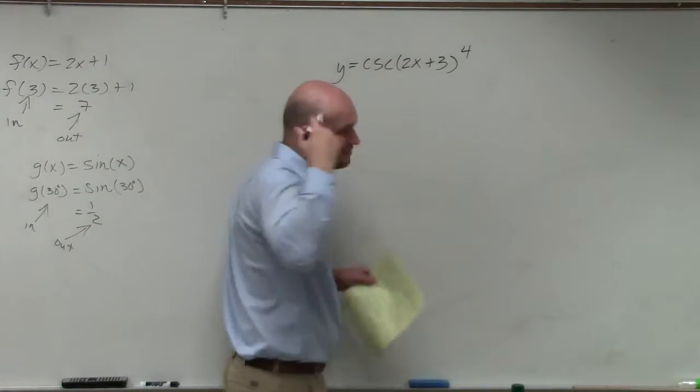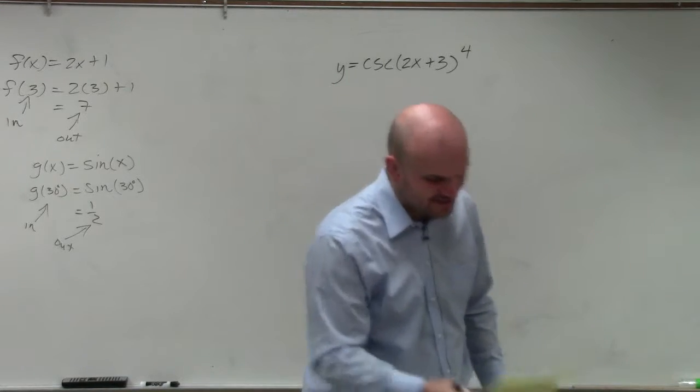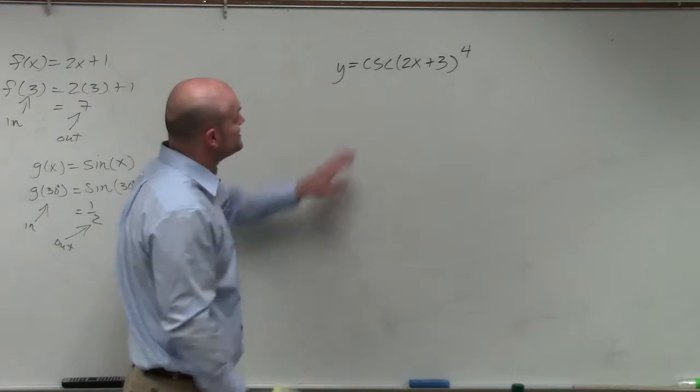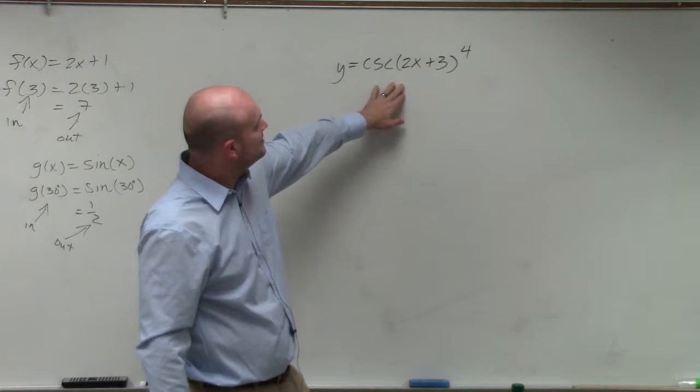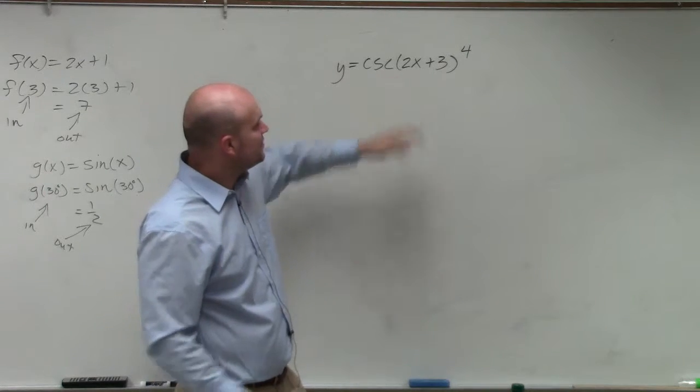So in this case, this is... and I'm going to talk more about this at the end of class. So this is cosecant of 2x plus 3 raised to the fourth.